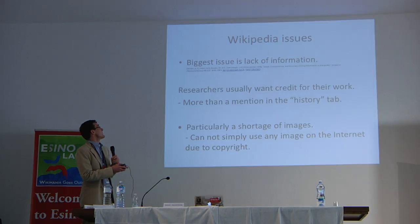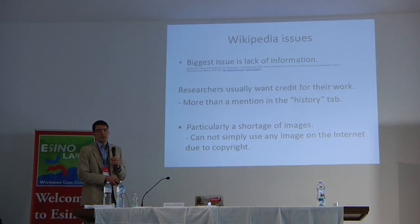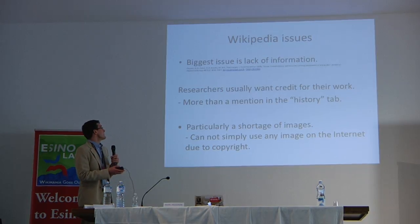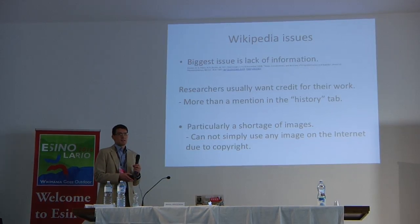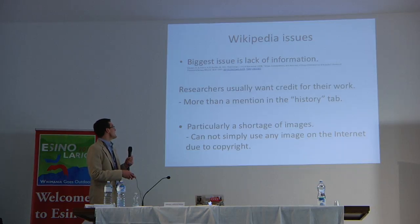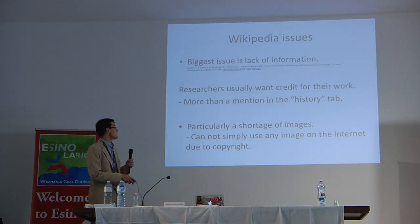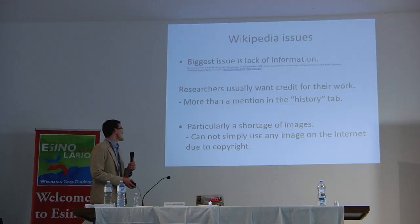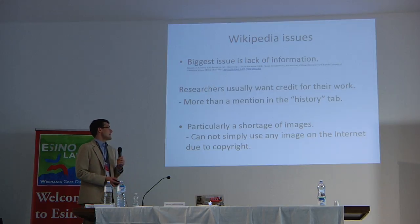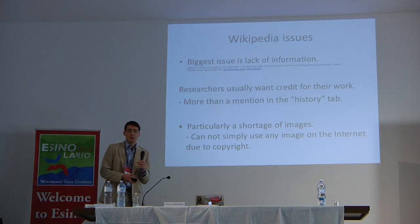It has been found that perhaps the biggest issue with Wikipedia is the lack of information in many aspects. Researchers and scholars often have a good sense of the whole picture of a subject, but they may still not want to contribute because they want credit for the work, more than a mention in the history tab. Particularly, there's a shortage of images because you cannot simply use any image on the internet due to copyright.